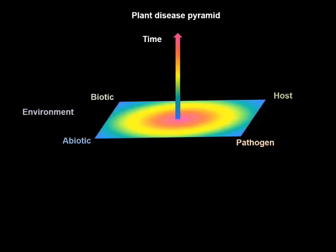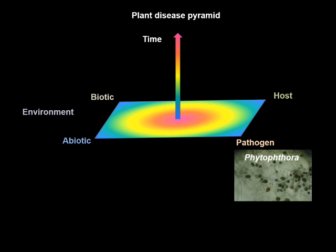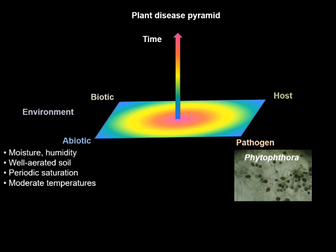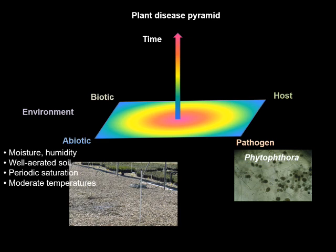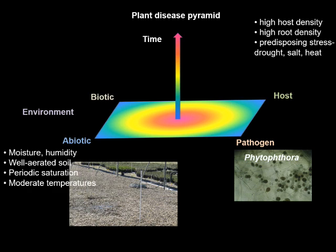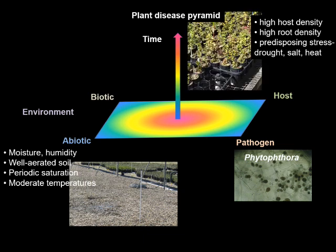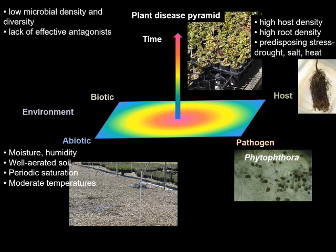Why is Phytophthora so common in nurseries? It goes back to the plant disease triangle, or expanded to the plant disease pyramid: an interaction between host, pathogen, and the environment — which has both abiotic and biotic components interacting over time to cause disease. For Phytophthora, favorable abiotic conditions include moisture, well-aerated soil, periodic saturation, and moderate temperatures — all conditions found in nurseries regularly. For the host, high host density and high root density facilitate easy root-to-root infection, and various predisposing stresses increase the chances of infection by making the host more susceptible.